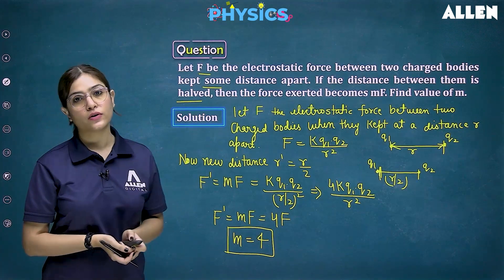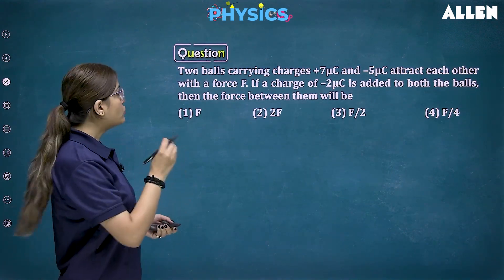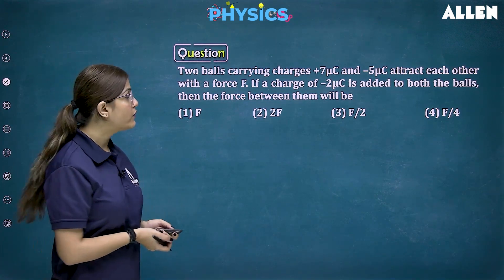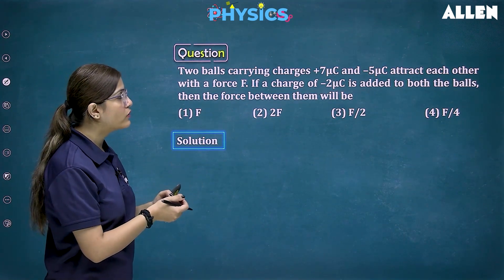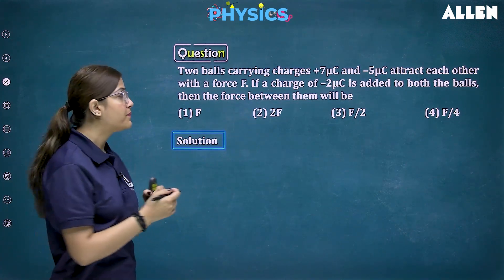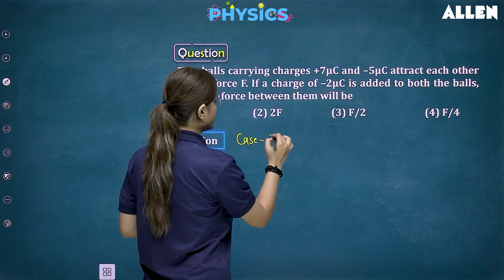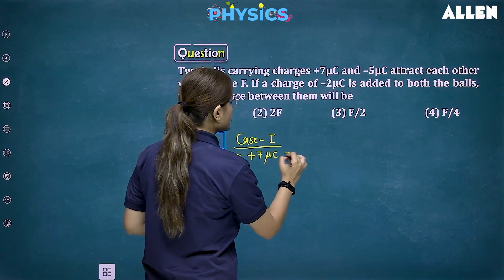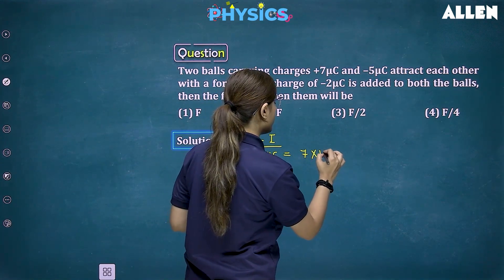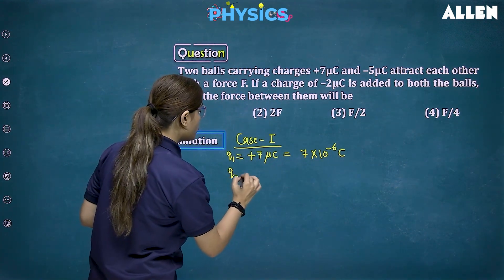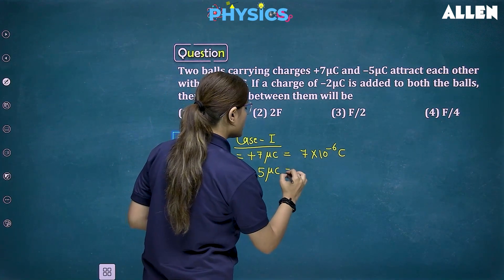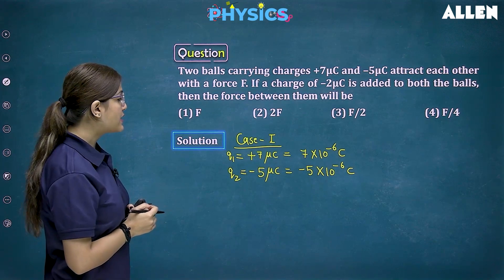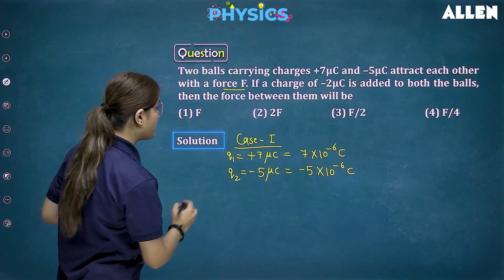Next question: Two balls carry charges of plus 7 microcoulomb and minus 5 microcoulomb and attract each other with force F. If a charge of minus 2 microcoulomb is added to both balls, what is the force between them? For Case 1: Q1 equals plus 7 microcoulomb, which is 7 times 10 to the power minus 6 Coulomb; Q2 equals minus 5 microcoulomb, which is minus 5 times 10 to the power minus 6 Coulomb.